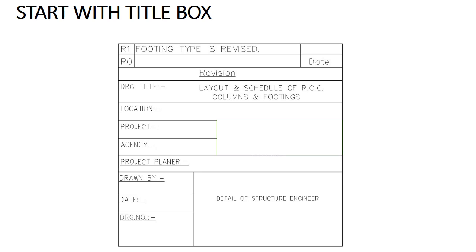Second is location of building — it gives the address of the construction site. Third is project, which contains details of the project name or purpose of the project. Fourth is agency, which is the detail of the contractor who carried out the construction work. Project planner means the name of the agency who made the planning drawing and other drawings excluding structural drawing. Details of the structural engineer are given at the bottom, including the name of the structural engineer, draftsman of the drawing, and date on which the drawing was drawn.